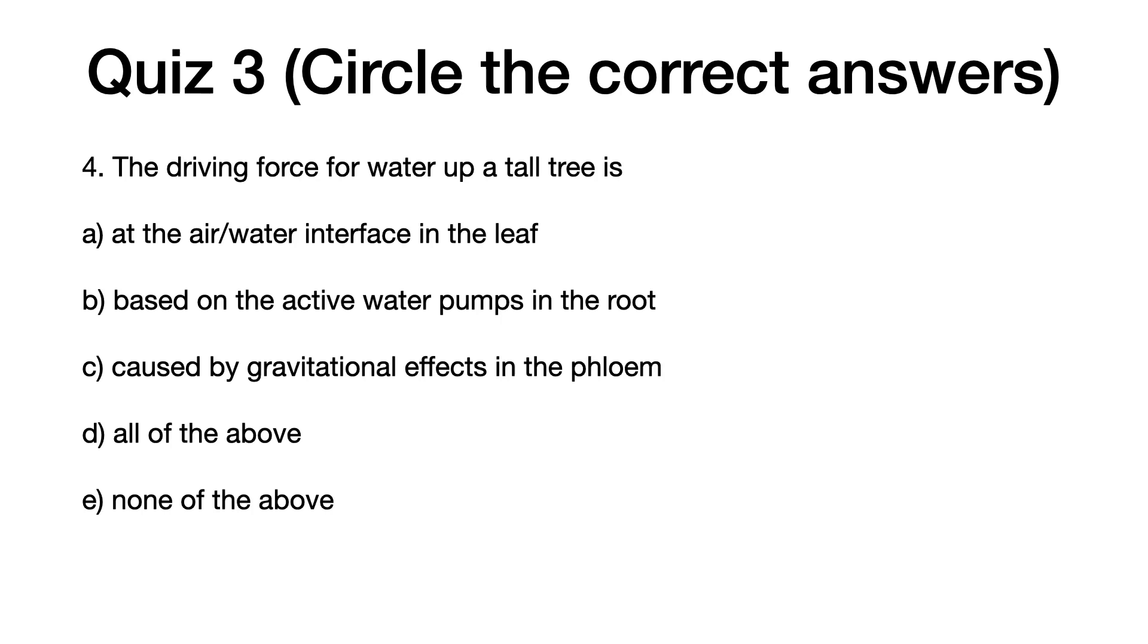Five, for osmosis to occur, it requires: A, a semi-permeable membrane. B, two separate compartments. C, one compartment must be able to build up pressure. D, all of the above. E, none of the above.